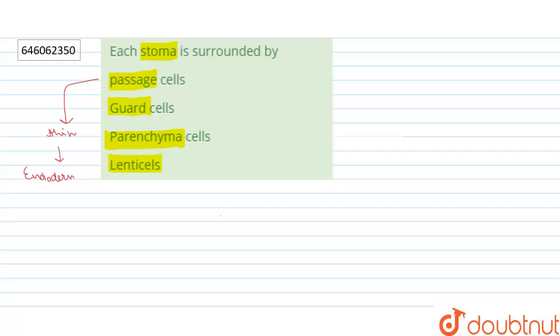Option number two is guard cells. If we talk about guard cells, they are the specialized cells that surround the stomata and help in gaseous exchange. They are produced in pairs with a gap between them which forms the stomatal pore.